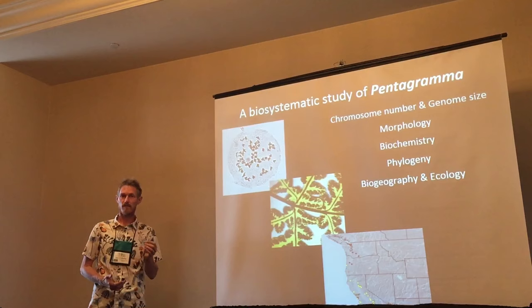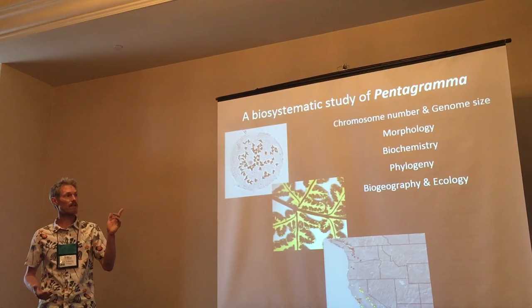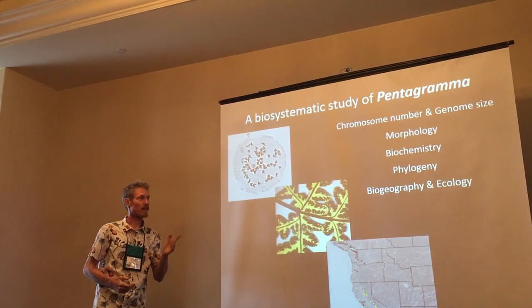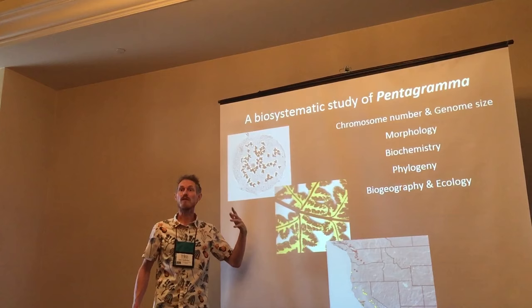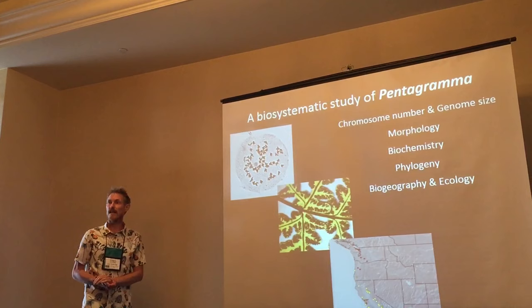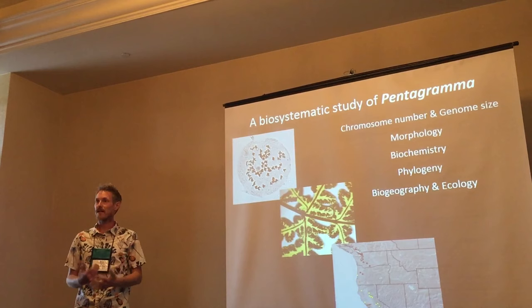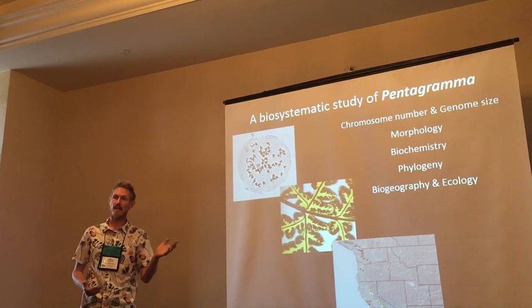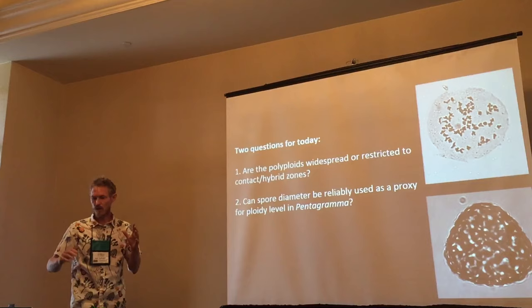Tying that into the morphology of the plants in the field and in herbarium specimens. There are a lot of interesting and probably systematically important and informative biochemical characters — these are some of those cheilanthoid ferns that produce farina, a bioflavonoid-rich powdery substance, mostly on the underside of the leaves, but in some species on the adaxial surface as well. Putting all of this in a phylogenetic framework and then tying that into the biogeography and ecology of the sporophytes and the gametophytes moving forward.